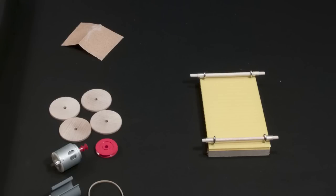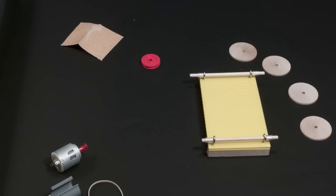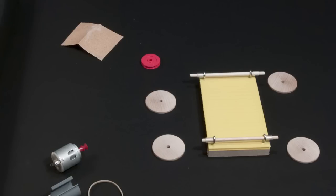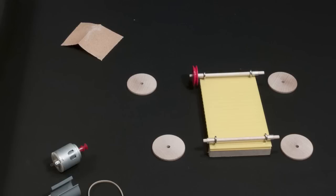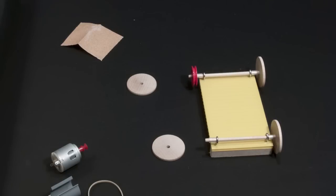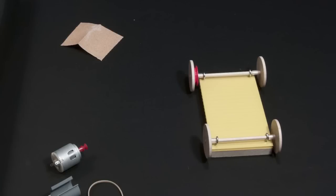It's almost time to put the wheels on the car, but first you need to attach the red pulley. Slide the pulley onto the axle at the back of your car and then slide a wheel on. Repeat for the remaining three wheels.